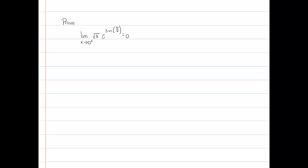In this selected example for differential calculus we're going to prove that the limit as x approaches zero from the right, or from the positive side, of the square root of x times e to the sine of pi over x is equal to zero.